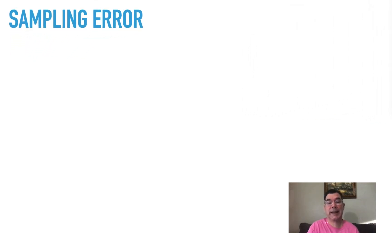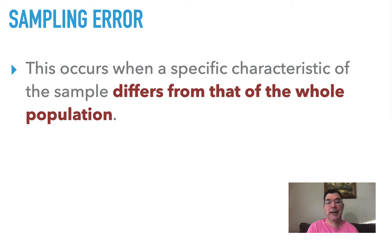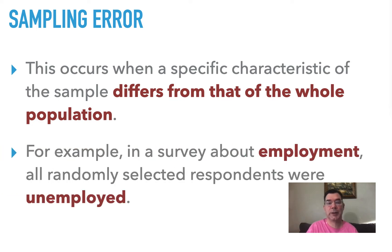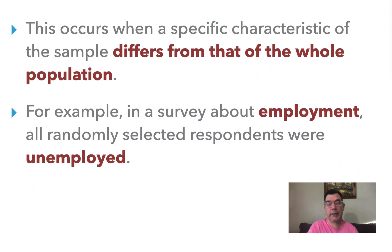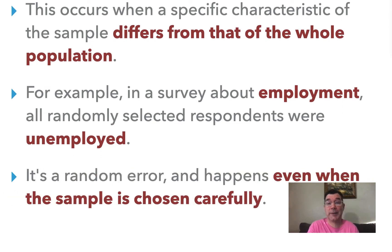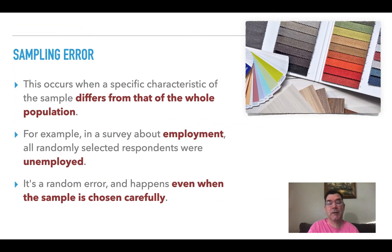The first type of error that you might encounter is what's called a sampling error. That's what happens when you take a sample from the population, but there's a specific characteristic of that sample that is different from the rest of the population. For example, you're taking a survey about employment or happiness in employment, but all of the people that you choose are unemployed. Now that could be a random error — it might just so happen that all of the people in your random sample are unemployed. So you really have to watch for this error because you do want your sample to be representative of the population.